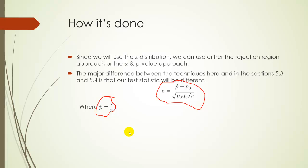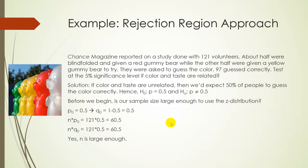So let's use it. Again, it's going to be the same procedures as before, just how we calculate the Z is different, and how we write H0 and Ha is different. So this is actually a real example. This was originally published in Chance Magazine, but it's also one of the examples in your textbook. So Chance Magazine reported on a study done with 121 volunteers. About half these volunteers were given a red gummy bear to munch on, and about half were given a yellow one instead. The volunteers were blindfolded, so they didn't know which gummy bear they were given, and they were asked just on taste to guess the color. Well, 97 of those volunteers guessed correctly.